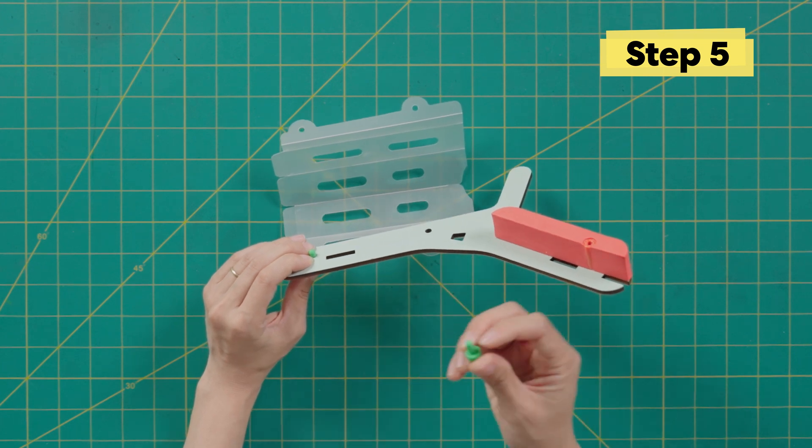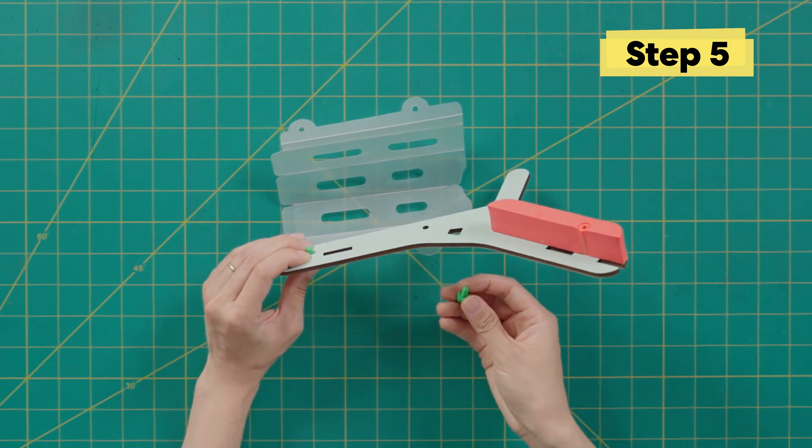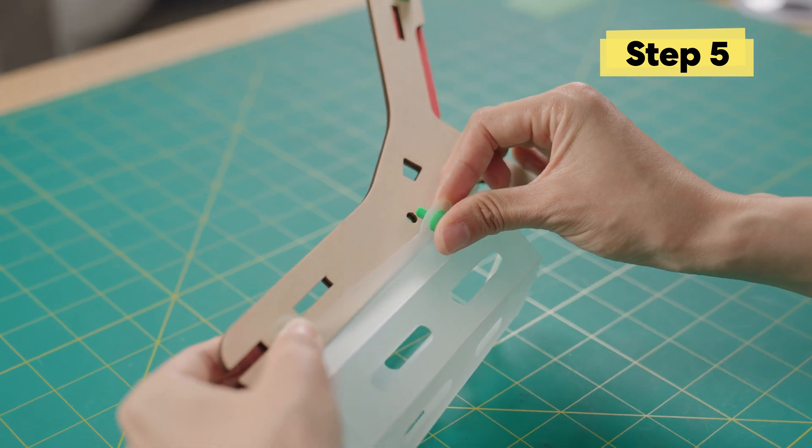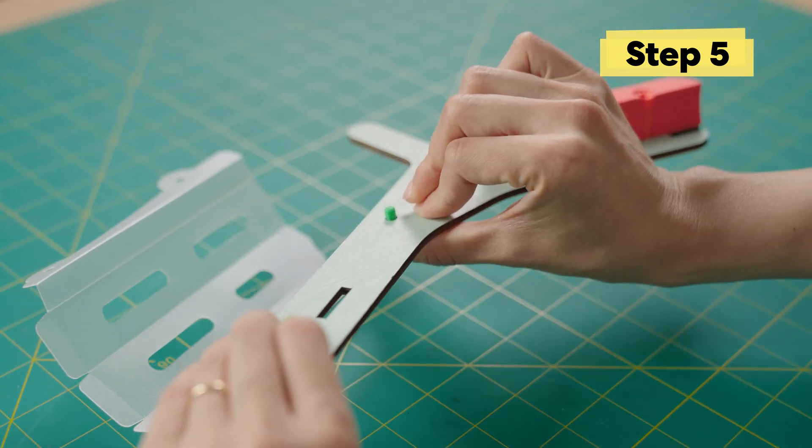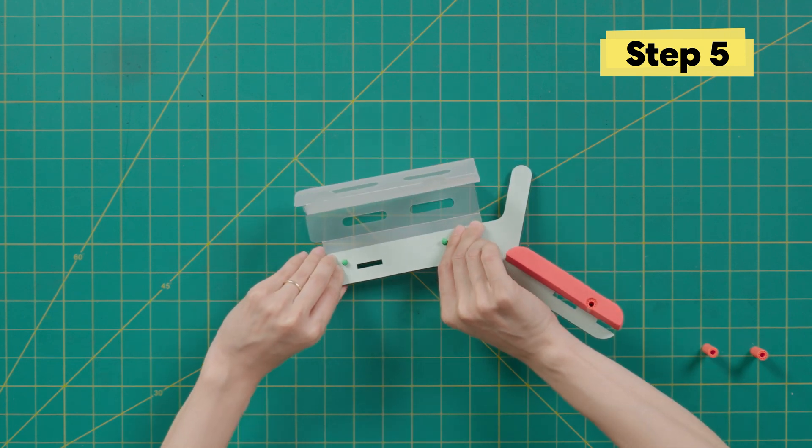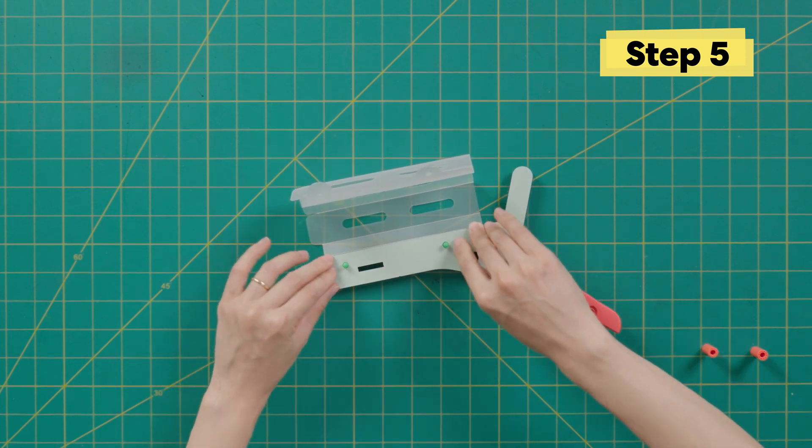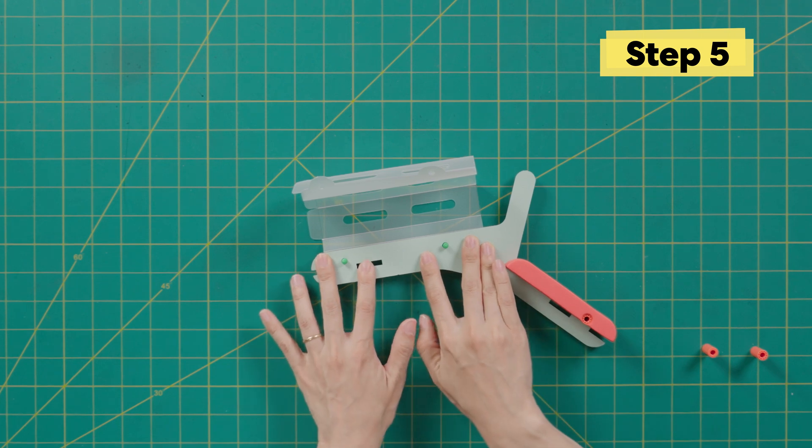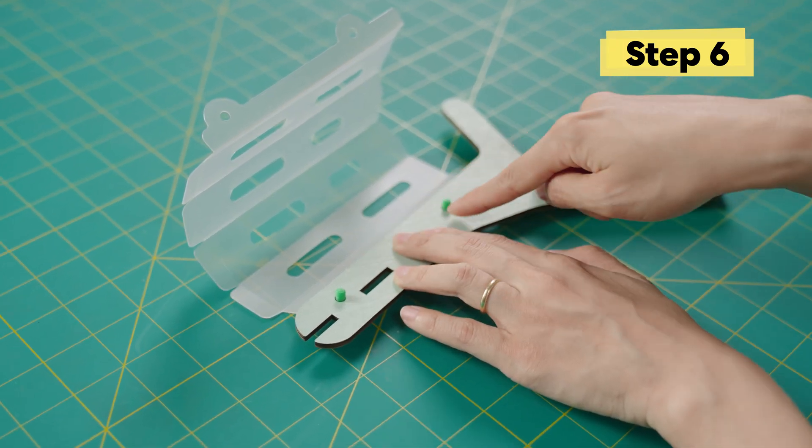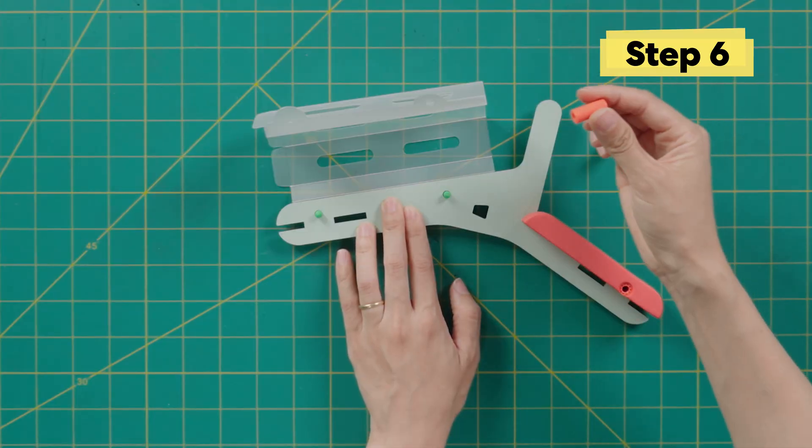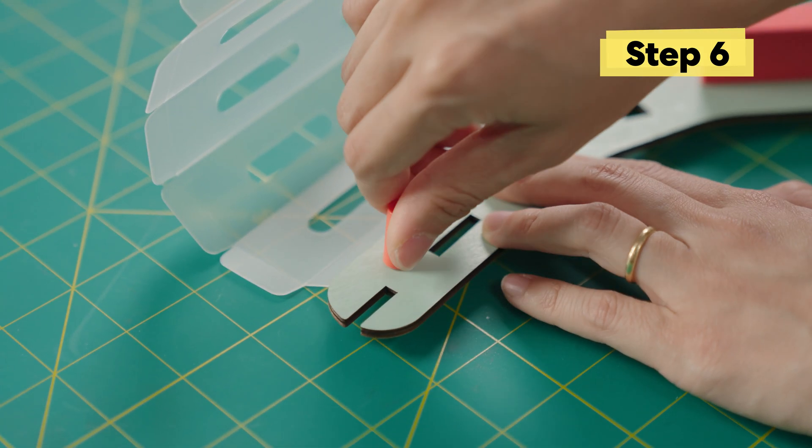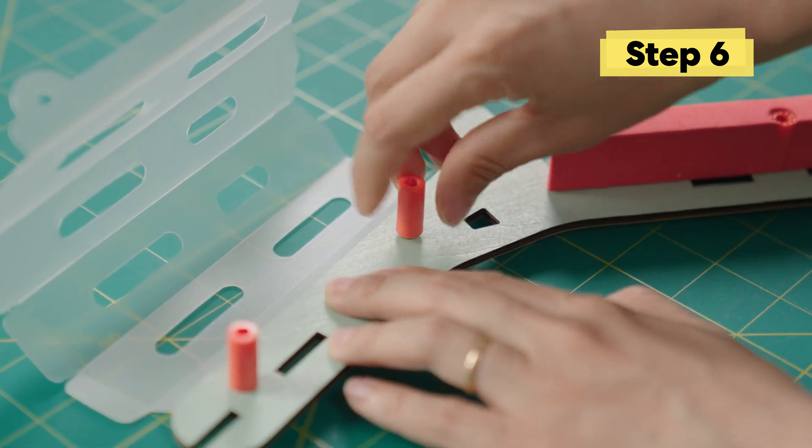Now that you have both bolts in, place it on the table and press down so the bolts are flat. Now take these two spacers and screw them onto the bolts here and here. I'll do them one at a time. There's the left one, and then the right one.